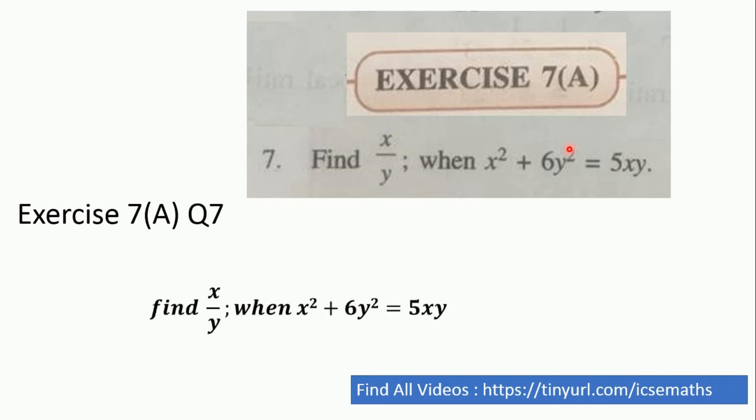Question number 7 is saying we need to find out x by y when x square plus 6y square is equal to 5xy. This is a very easy question, friends. So let's try to solve it.